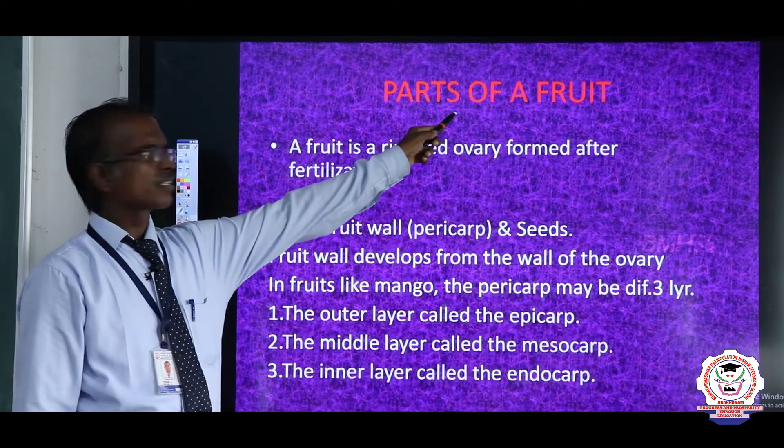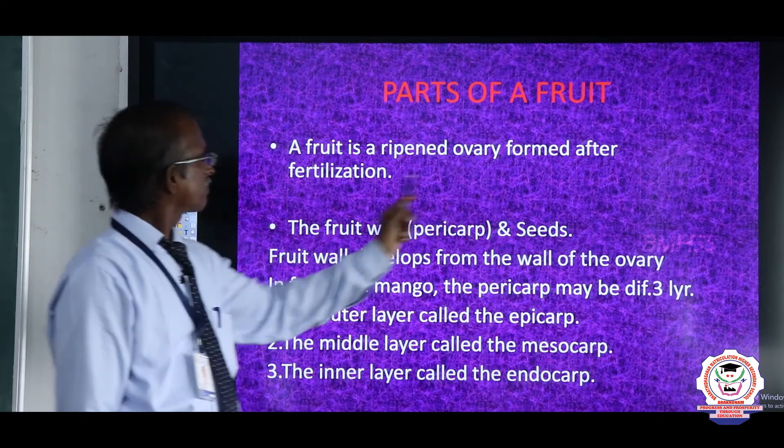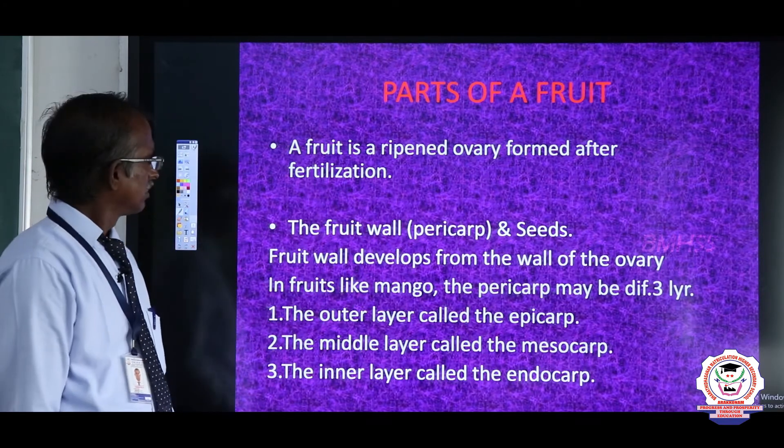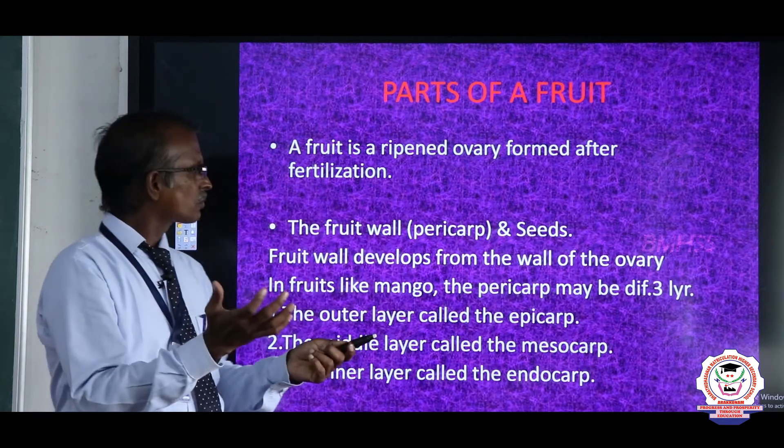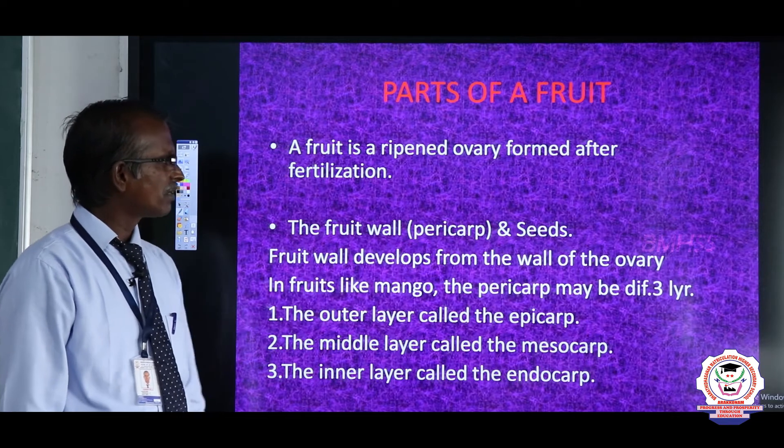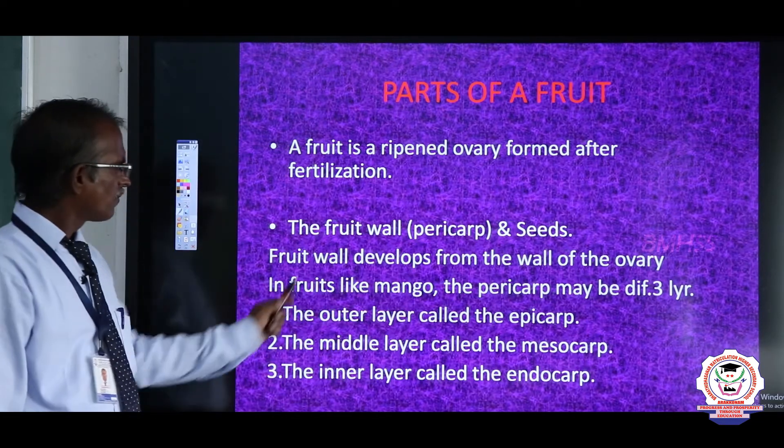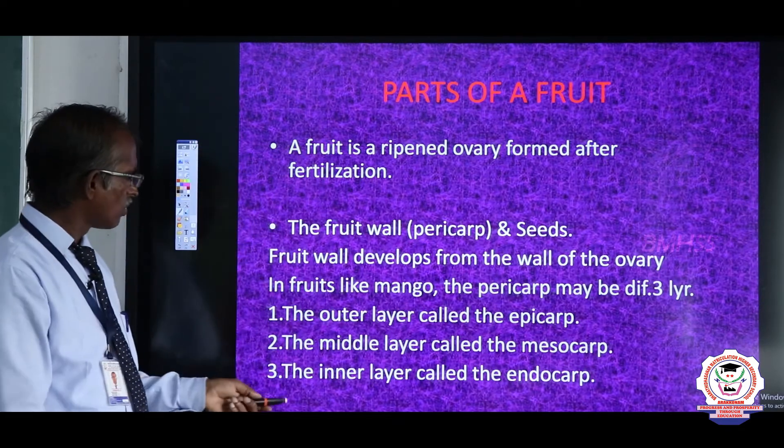Parts of a fruit: Fruit is ripened ovary, formed after fertilization. Each fruit consists of two parts: the outer part is called the fruit wall or pericarp, and seed. The fruit wall is developed from the wall of the ovary.